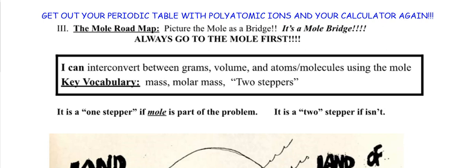When we do these problems, always go to the mole first. I can interconvert between grams, volume, and atoms using the mole. We can use molar mass, and we have a new term called a two-stepper. A one-stepper is if the mole is part of the problem — if it's either the given or what you want. If the mole is either given or what you're looking for, it's a one-stepper. If you do not see the word mole in the problem, it is a two-stepper.